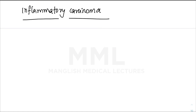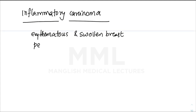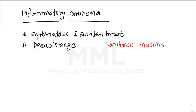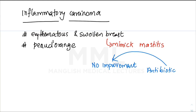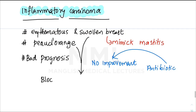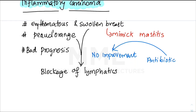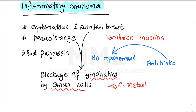The final subtype is inflammatory carcinoma, presenting as an erythematous and swollen breast with a peau d'orange appearance. It can mimic breast inflammation (mastitis), but there will be no improvement with antibiotics — so inflammatory carcinoma should be a differential diagnosis. It carries a bad prognosis because there is blockage of dermal lymphatics by tumor cells, indicating early metastasis.